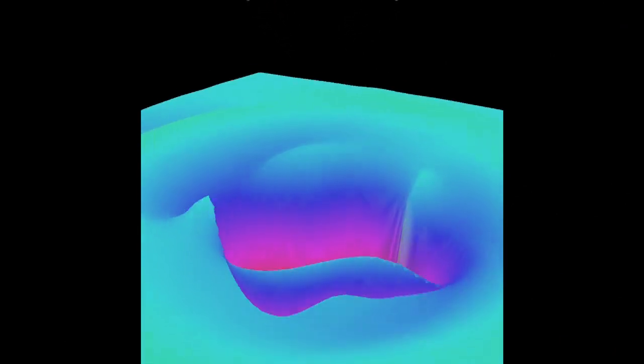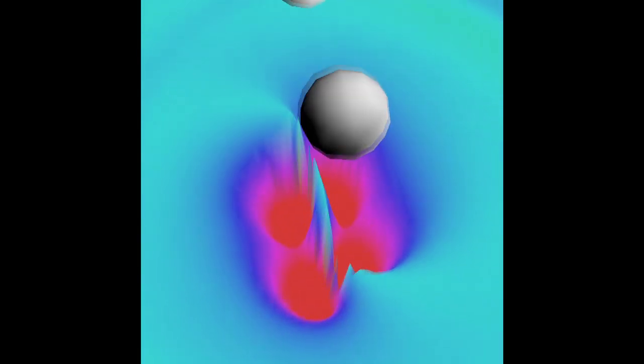Here we see a simulation of two black holes orbiting around each other. The black hole binaries are releasing energy in the form of gravitational waves.